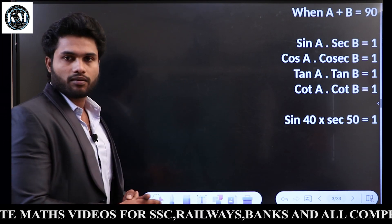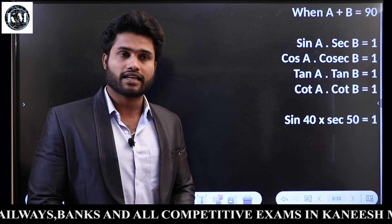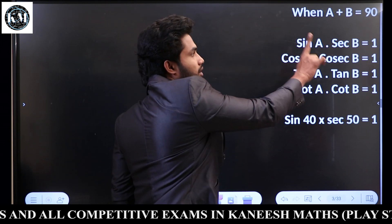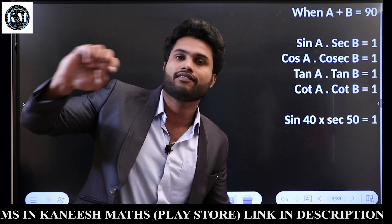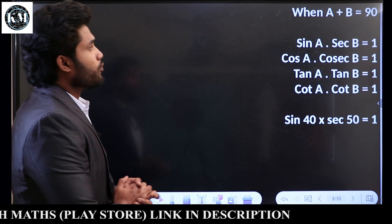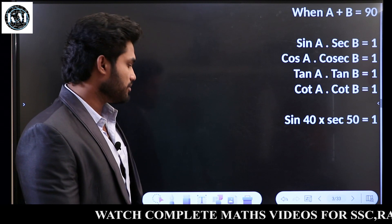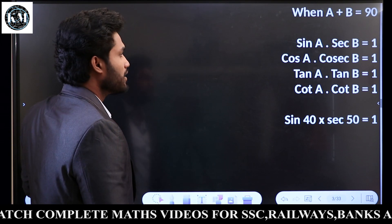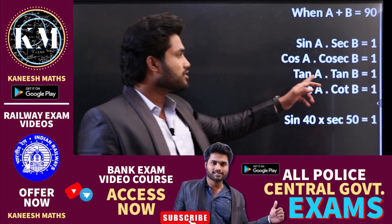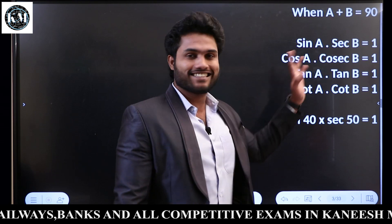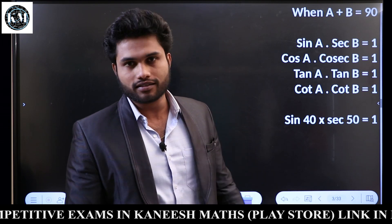Let's see the important rules. In the first and second videos we covered Sin(90−θ). This rule: Sin A × Sec B equals 1. Cos A × Cos B equals 1. Tan A × Tan B equals 1. Cot A × Cot B equals 1. For further understanding, I will explain.